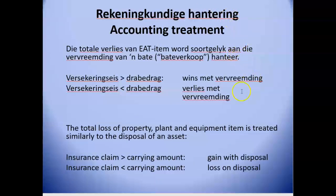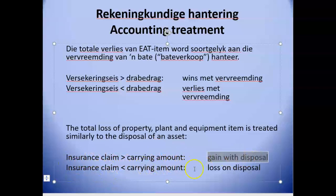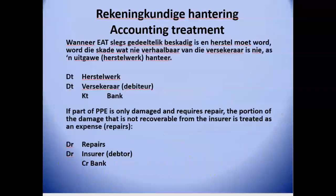The total loss of property, plant and equipment is treated similarly to a disposal of an asset. The proceeds received are the value of the insurance claim lodged. If the insurance claim value exceeds the carrying amount, a gain is recognized. If the insurance claim is less than the carrying amount, a loss on disposal is recorded.